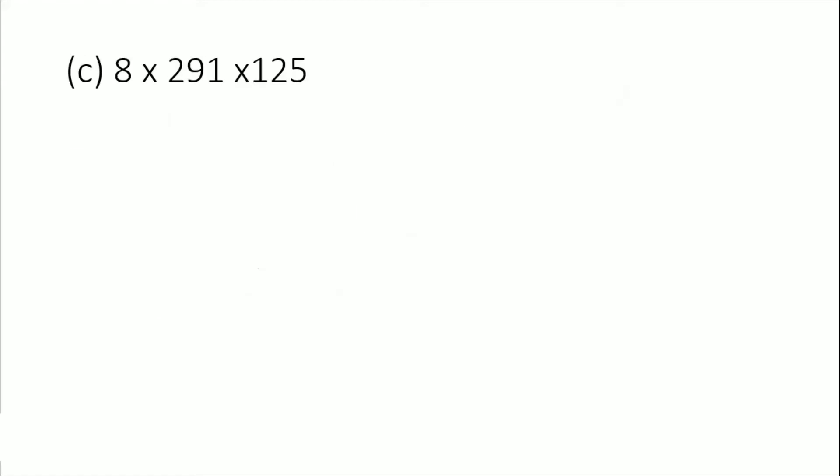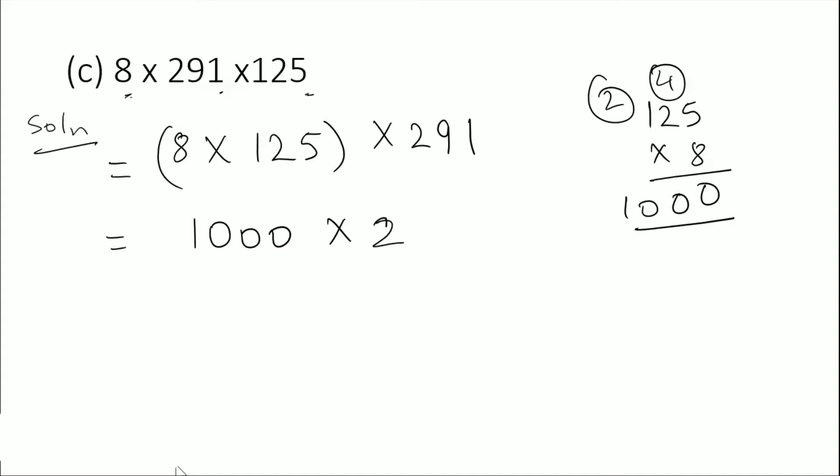Moving on to the next one: 8 into 291 into 125. Which two numbers would give me 0 at the ones place? 8 times 1 would be 8, 8 times 5 would be 40. So I'll pair these together: 8 times 125 times 291. 125 times 8 is 1000, so I'll write 1000 times 291. Multiply 291 by 1 and then put the zeros, so the answer is 291,000.